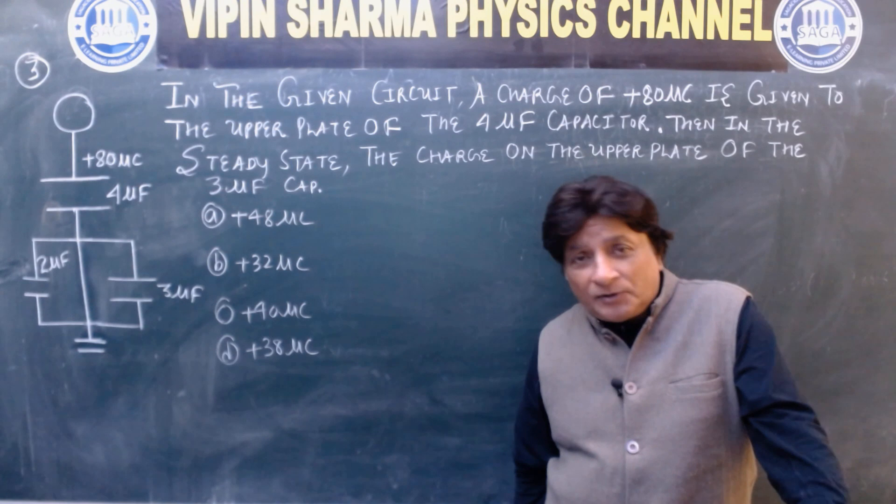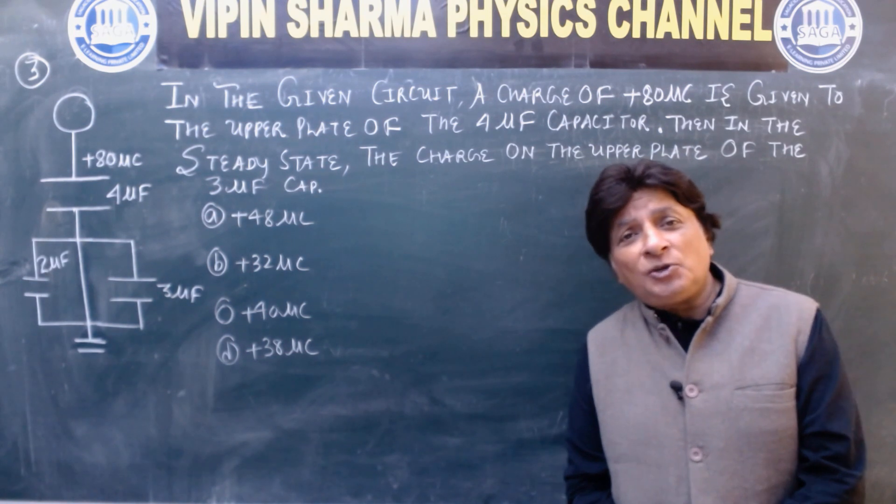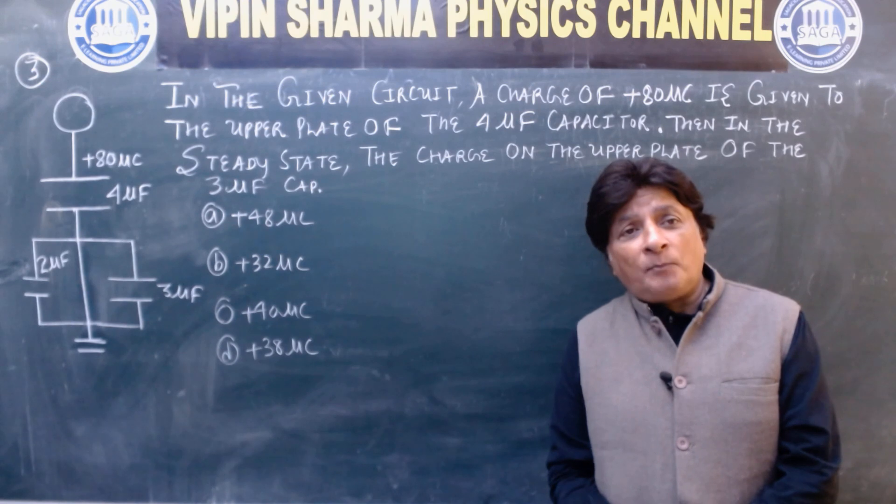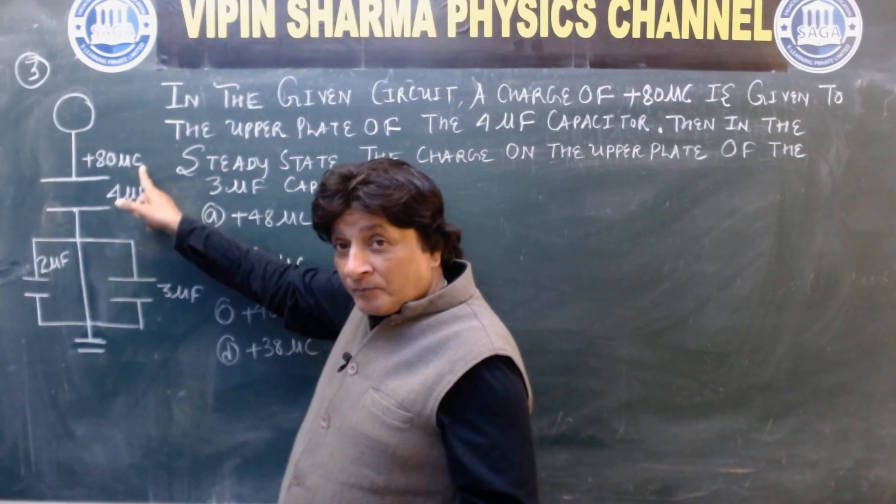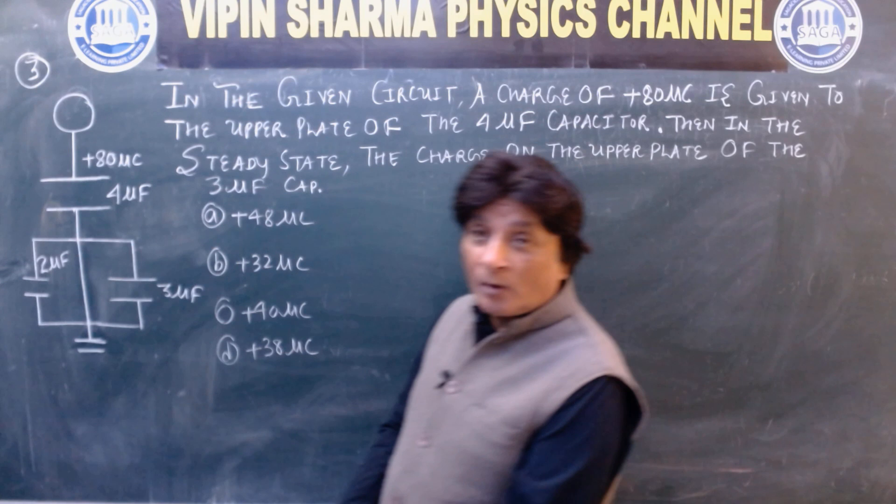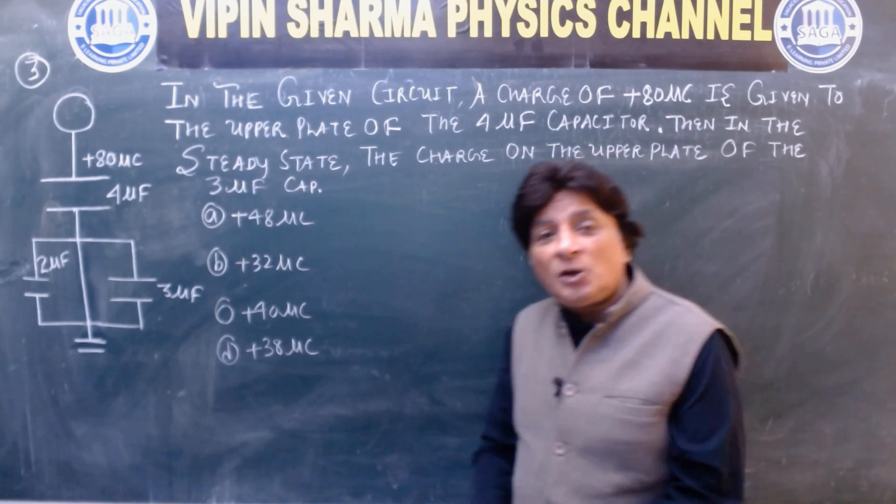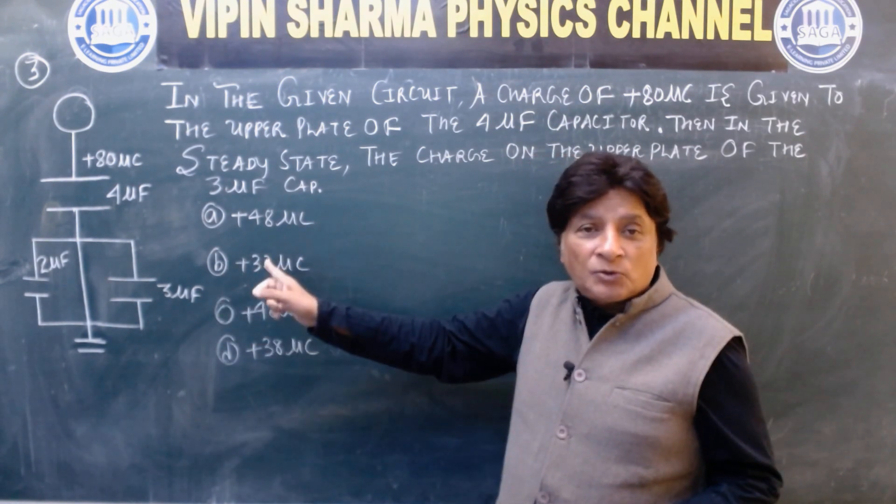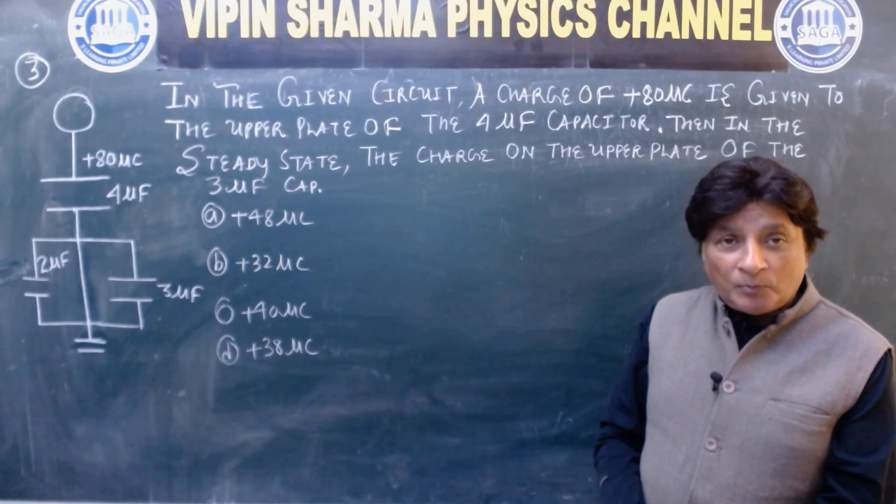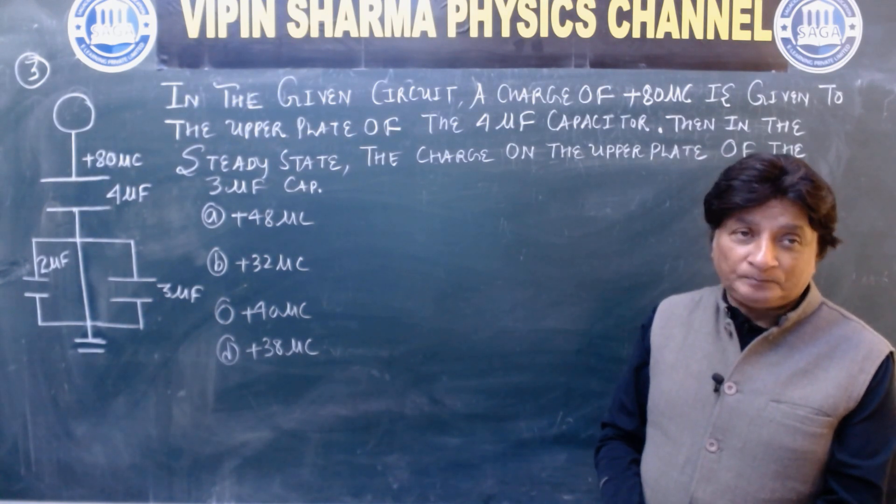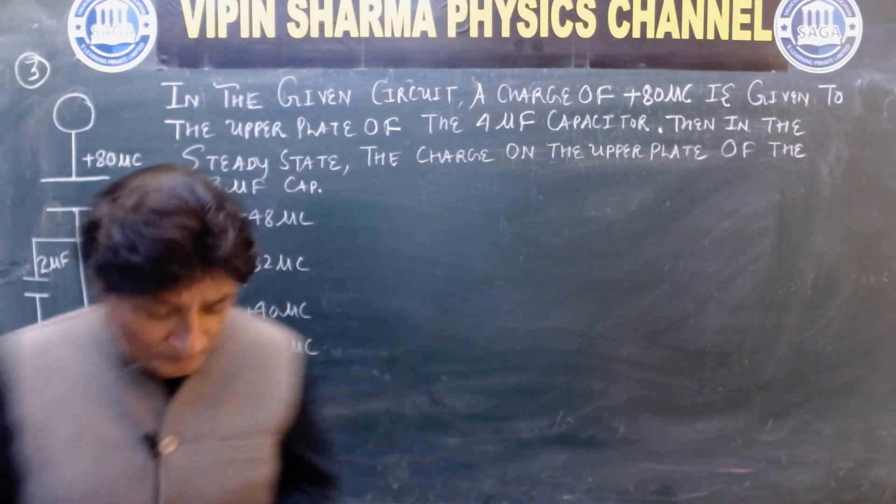Students, there is one question. In the given circuit, a charge of plus 80 microcoulomb is given to the upper plate of 4 microfarad capacitor. The circuit is given, this is earthed, this is not a capacitor, it is earth.